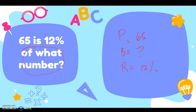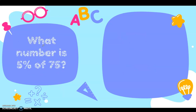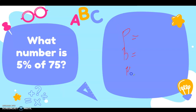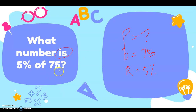Next: what number is 5 percent of 75? The rate is 5 percent. The base is 75 because it comes before the word 'of' — 75 is the total. Our missing is the percentage, because we are asking 'what number is 5 percent of 75.'